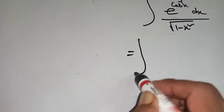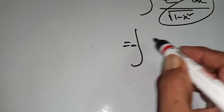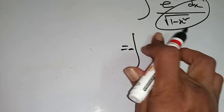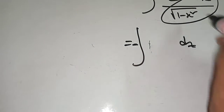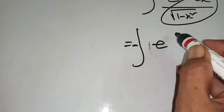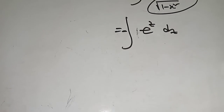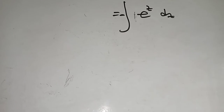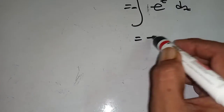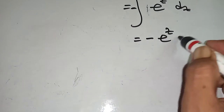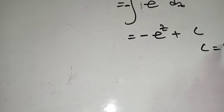Integration: the value of this part equals minus dz, so we get minus integration of e to the power z dz. Integration of e to the power z means e to the power z, plus c, where c is the integration constant.